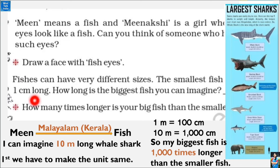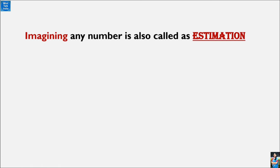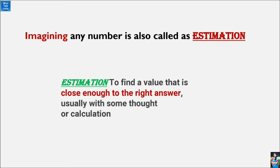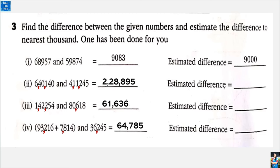What we just did — imagining the smallest and the biggest fish — is called estimation. Estimation means imagining any number or digit as close as possible to our answer. We can also say that estimation is finding a value that is close enough to the right answer. It doesn't have to be the exact right answer, but as close as possible — that is called estimation.